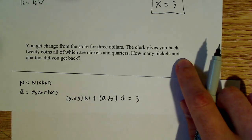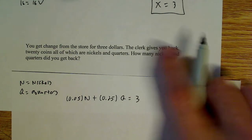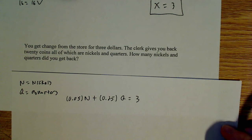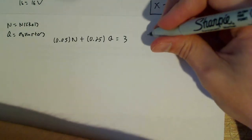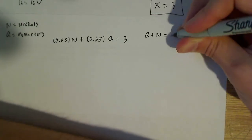And the next thing we know is that from this, we know that the clerk gave us back 20 coins. So the clerk gave us back 20 coins. So that just tells me that q plus n is equal to 20.